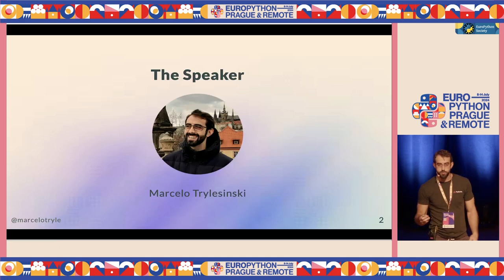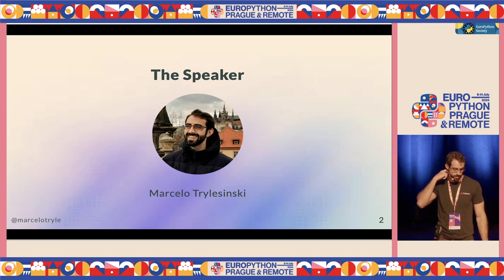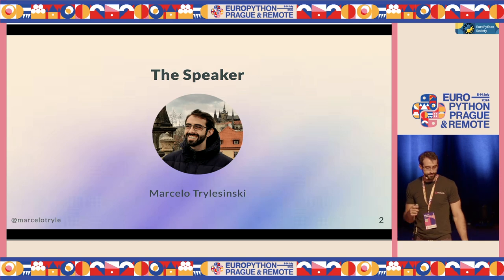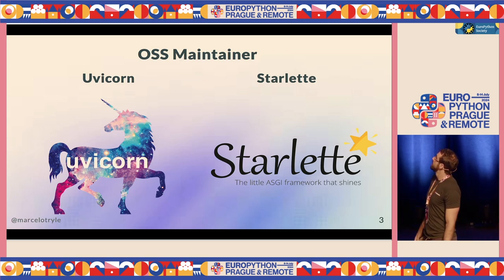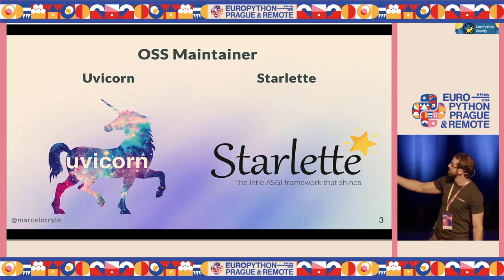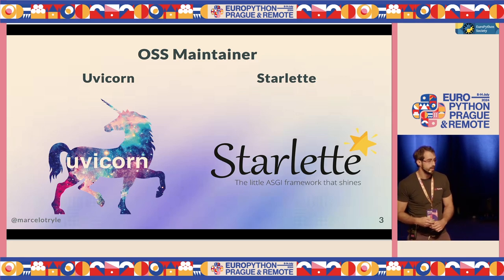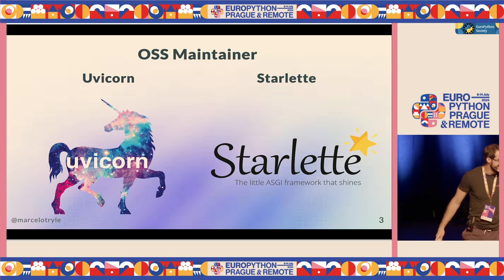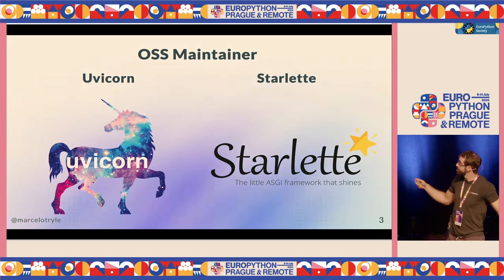I am Marcelo. I'm from Brazil. I live in the Netherlands. I work at Pydantic, the validation package. And I'm also the maintainer of Uvicorn and Starlette. One is a web server, and the other is one of the dependencies of FastAPI. And yeah, I'll be talking about FastAPI.